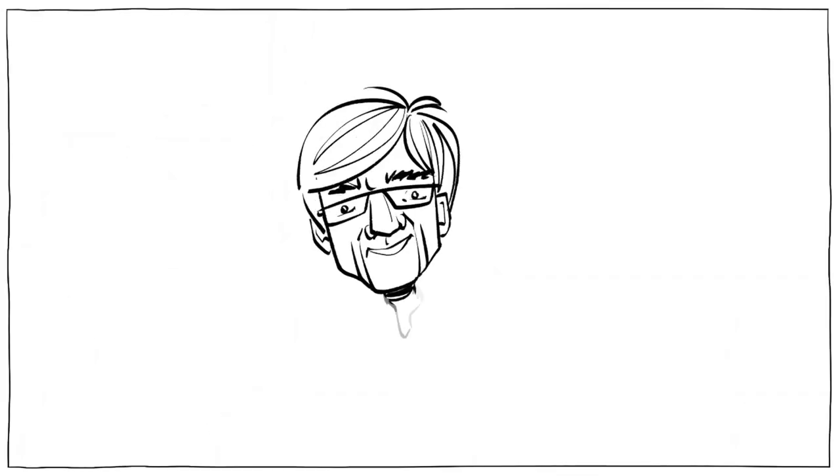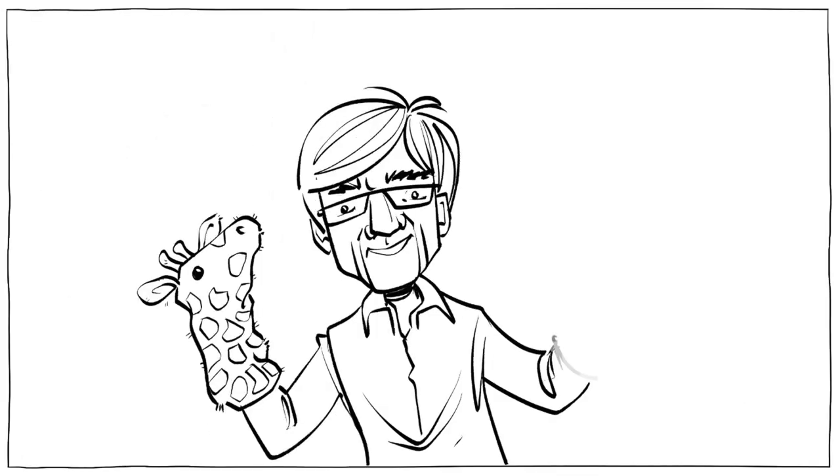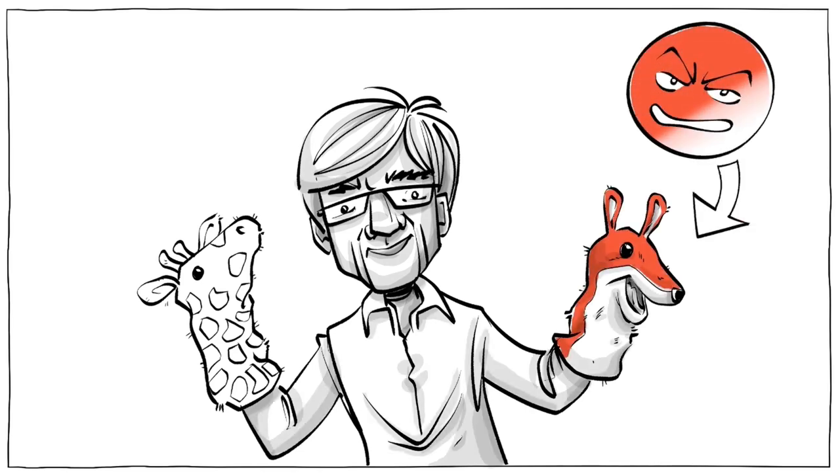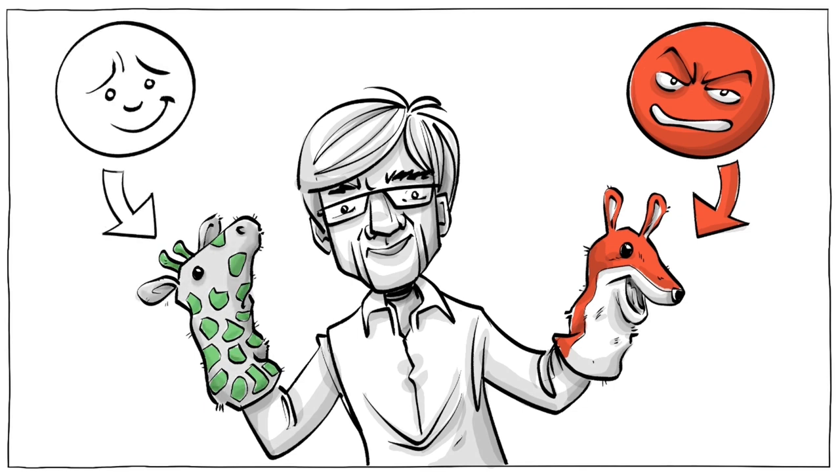Marshall Rosenberg, who developed the model, liked to show the differences between the communication styles with two animals. The Jackal was a symbol of aggression, dominance, and violent communication. The giraffe with his long neck and big heart represents a clear-sighted and compassionate speaker and non-violent communication style.